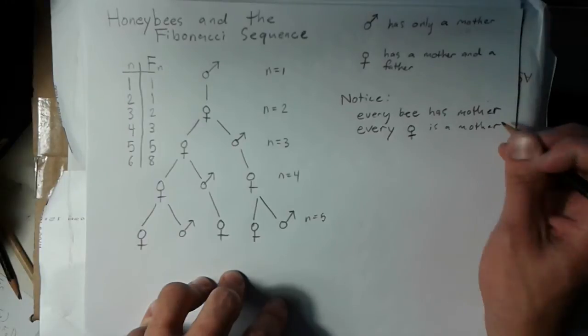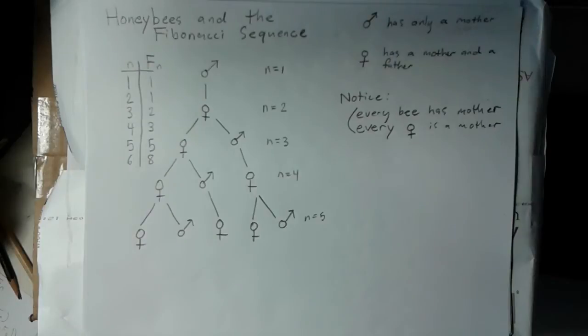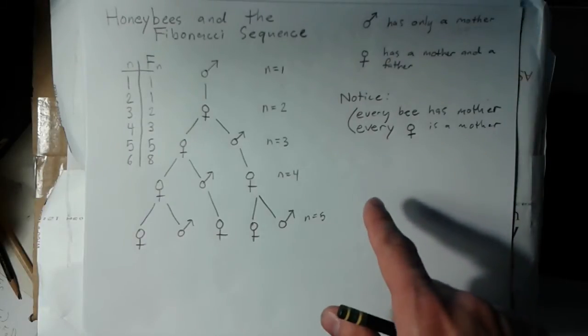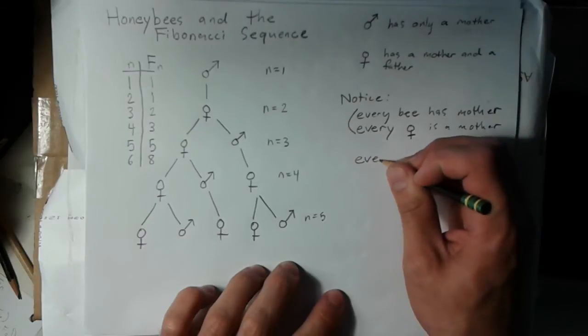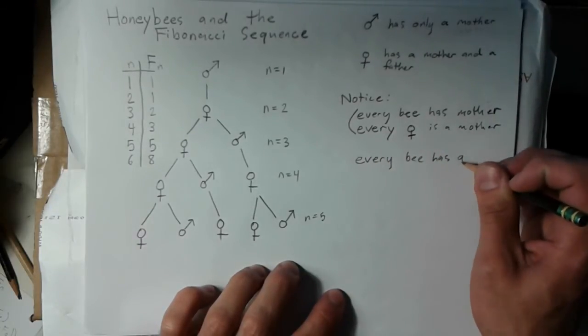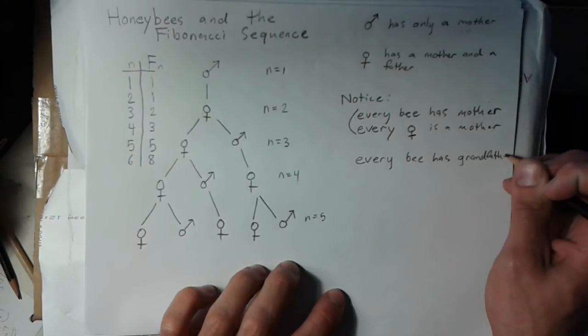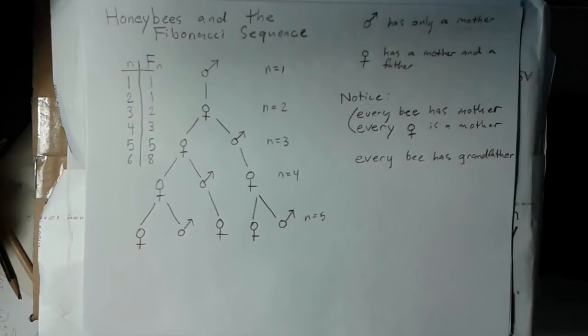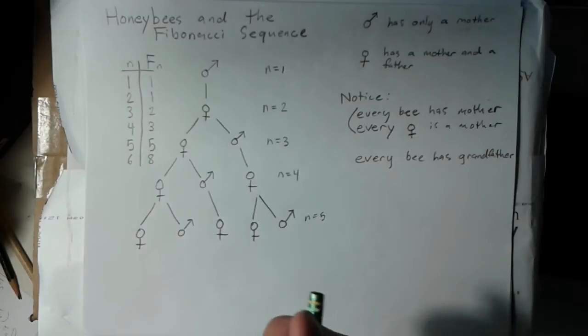These two pieces of information together have significance. Something less obvious is that every bee has a grandfather, and every bee has one grandfather exactly.